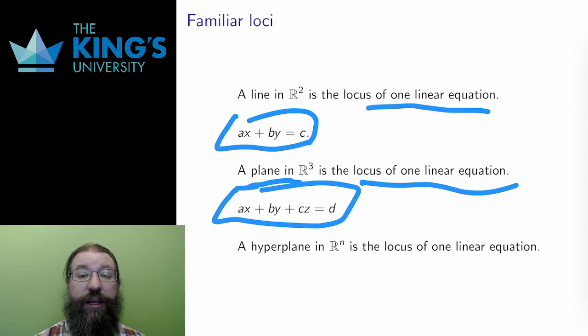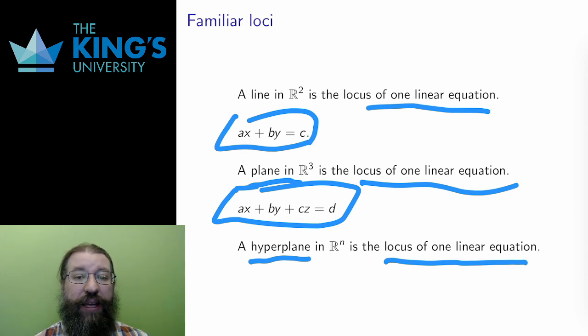This extends to higher dimensions in the notion of a hyperplane, a locus of one linear equation in Rn. This will not be a plane dimension 2. Instead, it will be dimension n-1, because there's only one restriction to drop. The best generalization of a plane is not simply a two-dimensional thing, but rather something that is one-dimensional less than its ambient space. It has one equation, one restriction, so the dimension is dropped by 1 from whatever it started in.